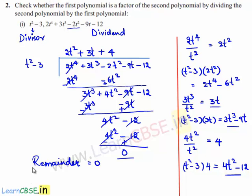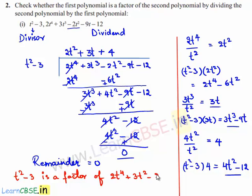Hence, we can say that t²-3 is a factor of 2t⁴+3t³-2t²-9t-12, because when 2t⁴+3t³-2t²-9t-12 is divided by t²-3, we get remainder 0. That is why t²-3 is a factor of the given polynomial.